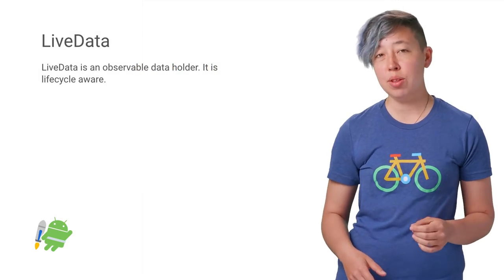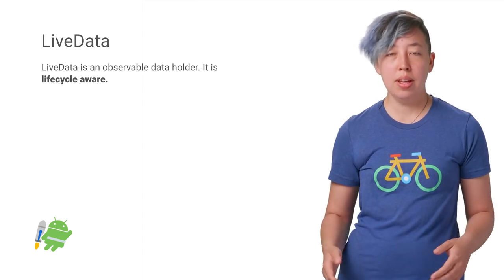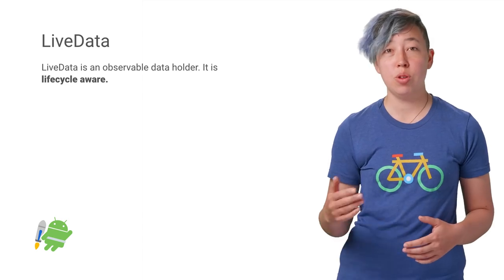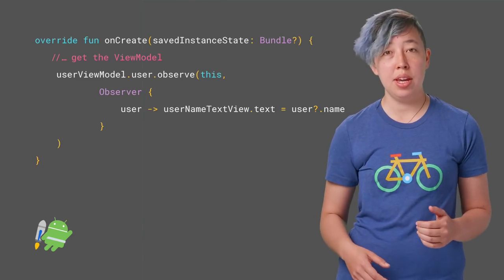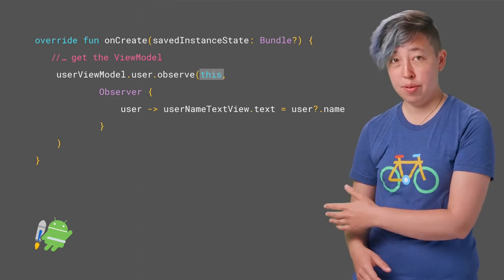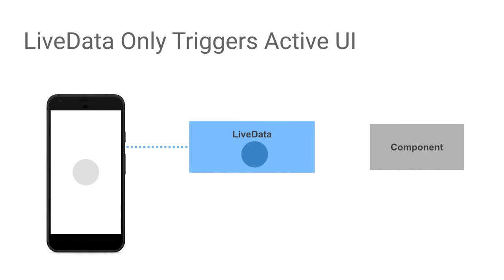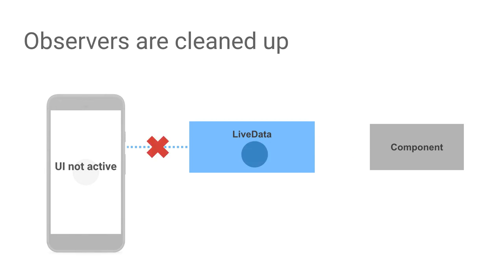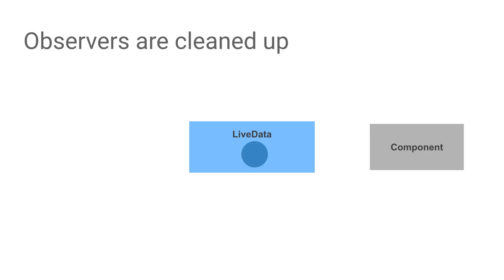What makes LiveData different from other observables is that it is also lifecycle aware. This means it understands whether your UI is on-screen, off-screen, or destroyed. LiveData knows about your UI state because you pass it in when you call observe. If your activity is not on-screen, LiveData doesn't trigger useless UI updates. If the activity or UI gets destroyed, the observation connection is cleaned up automatically by LiveData. Thus, you'll never accidentally trigger an activity or fragment that is off-screen or destroyed to redraw itself.